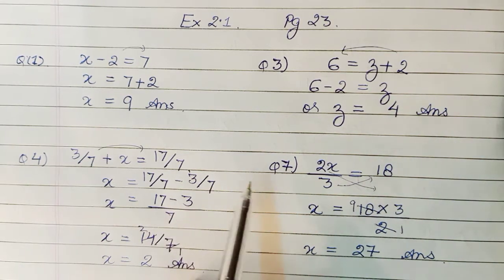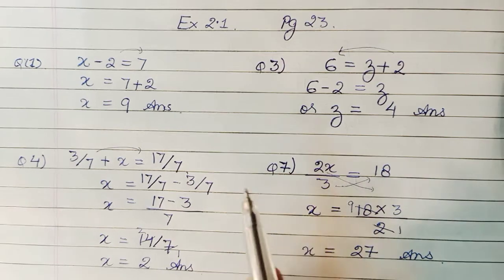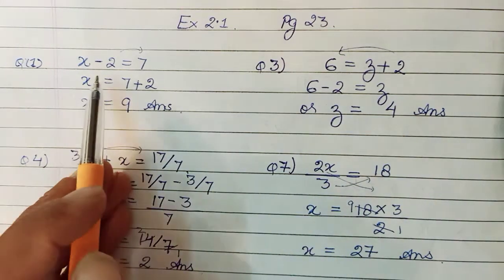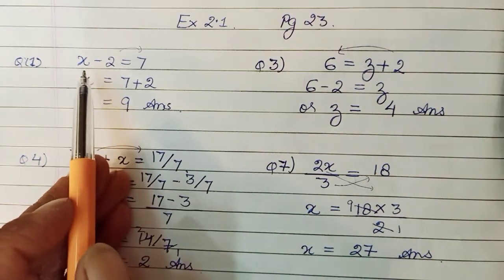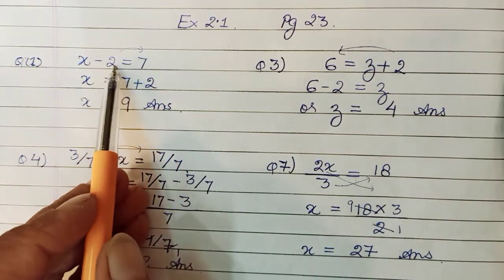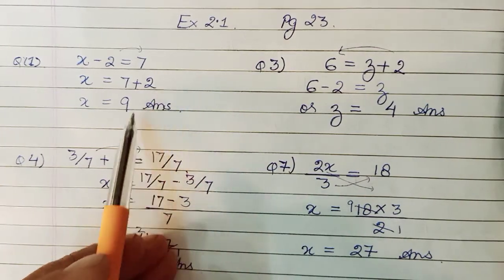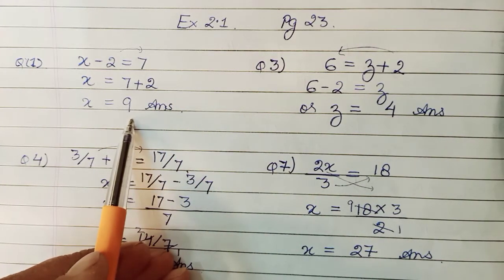The first example, back to first example, which was x minus 2 equals 7. I will have to remove this minus 2 from here, I will take it to the other side. So this becomes plus 2. So 7 plus 2, straight away your solution is x equals 9.